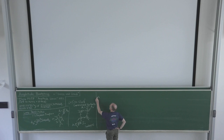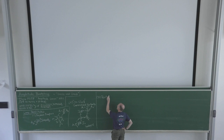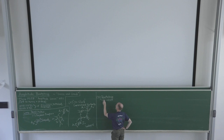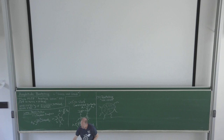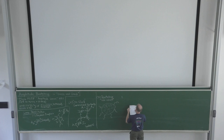Loop integrals are hard, and if you can avoid them you should. The bootstrap approach — which I decided to call the 'no-shell approach' — tries not to look inside the loops. Instead of computing loop integrals directly, you build up the amplitude differently. The key idea is: guess and then check.